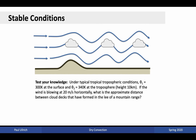Here's a question to test your knowledge. Under typical tropospheric conditions, the potential temperature is 300K at the surface and 340K at a height of approximately 10 kilometers. If the wind is blowing at 20 meters per second horizontally, can you calculate the approximate distance between cloud decks formed in the lee of a mountain range? To do this: use the potential temperatures to calculate the lapse rate, then the Brunt-Väisälä frequency, then the vertical displacement expression to estimate the oscillation period. With the background wind speed, you can then calculate the distance between cloud decks.